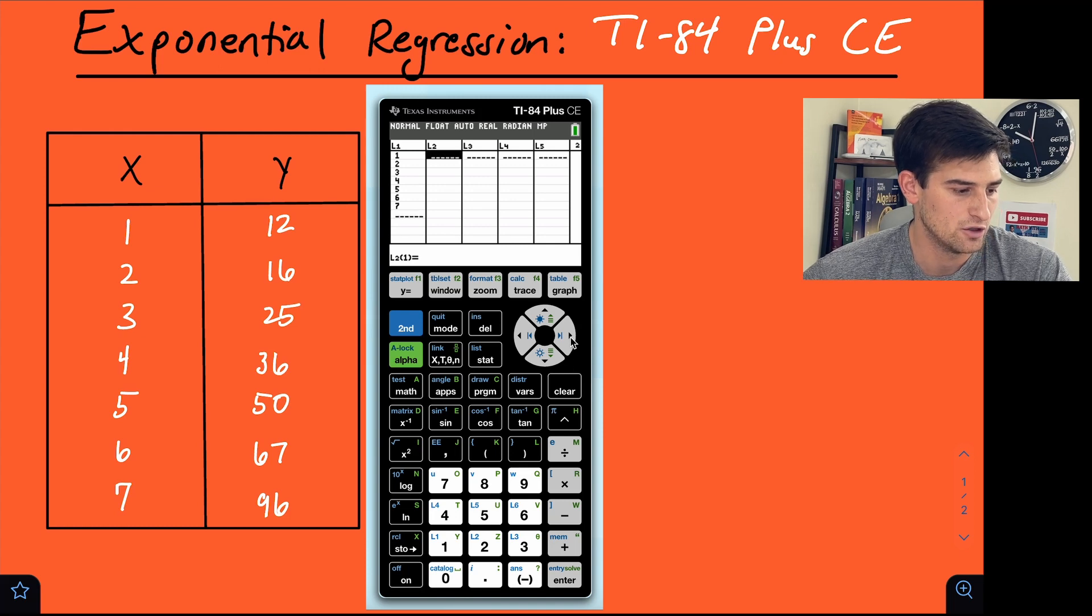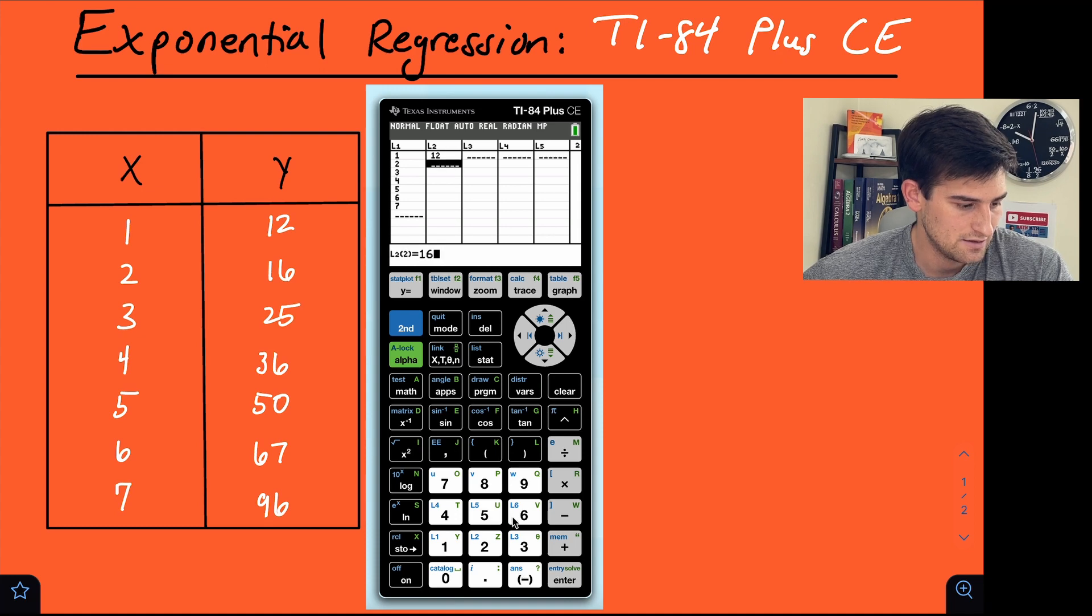Now I'm going to use the right arrow to go over to L2. These are my y values. So now I have 12, 16, 25, 36, 50, 67, and lastly, 96. Okay. Now I hit enter.